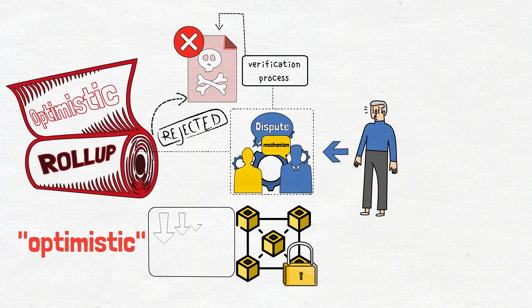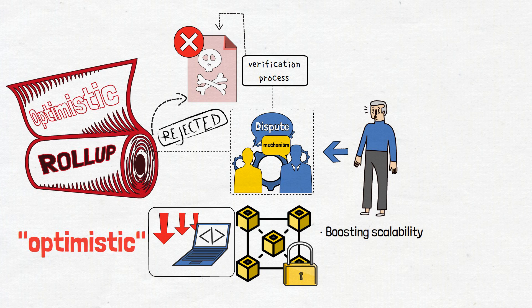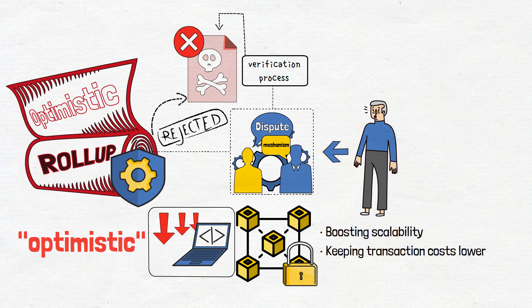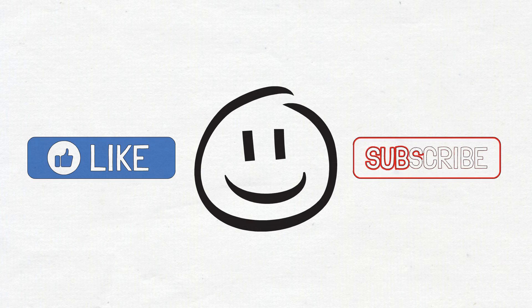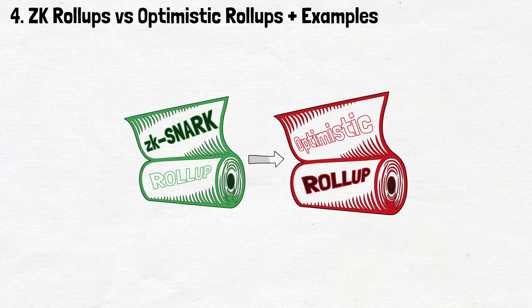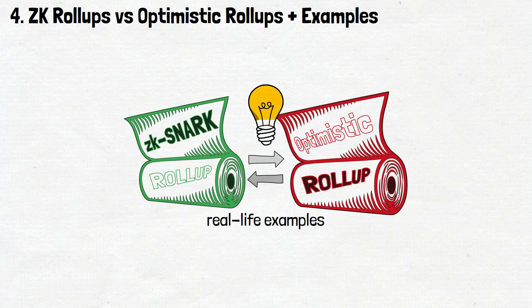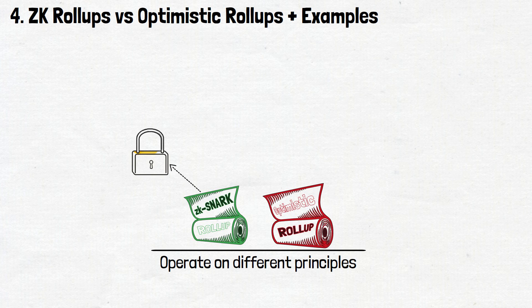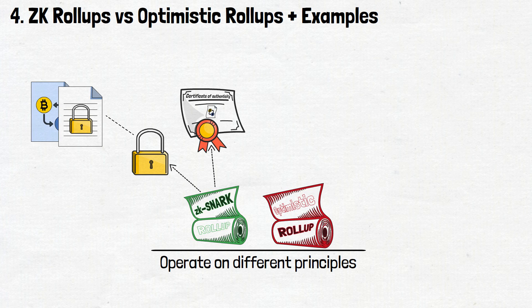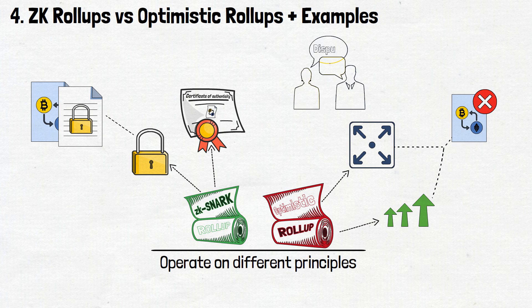This optimistic approach significantly reduces the computational burden on the main chain, boosting scalability and keeping transaction costs lower. However, this reliance on trust and the need for a dispute resolution process introduces a slight delay compared to ZK rollups. But the trade-off is worth it for the increased scalability and efficiency it brings. Now that we've gotten to know both ZK snarks and optimistic rollups, let's compare these rollup techniques. ZKs prioritize privacy by concealing transaction details while providing cryptographic proofs of validity. On the other hand, optimistic rollups focus on scalability and efficiency by assuming transaction validity unless proven otherwise through a dispute mechanism.